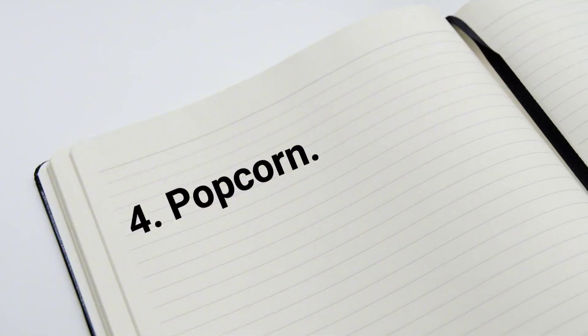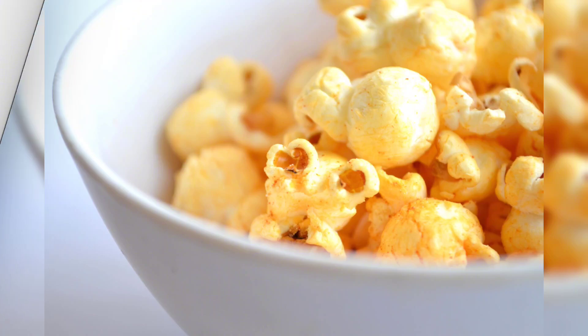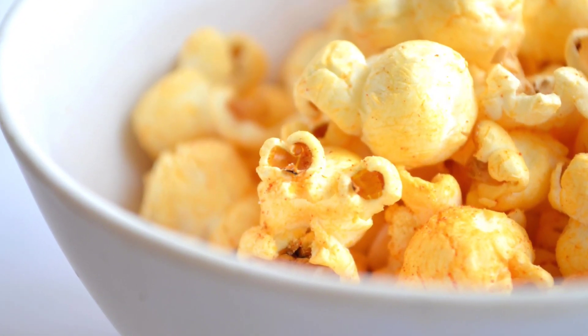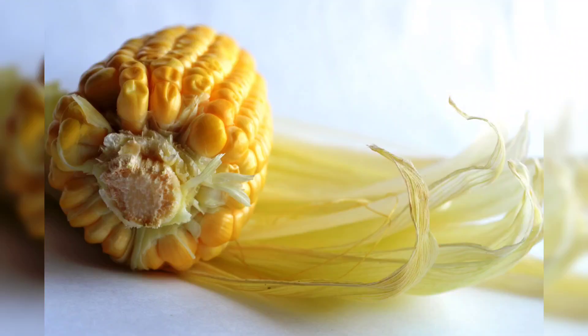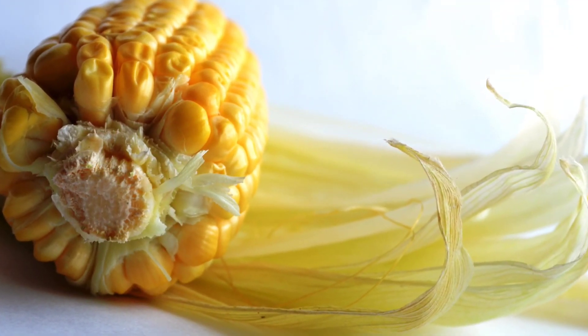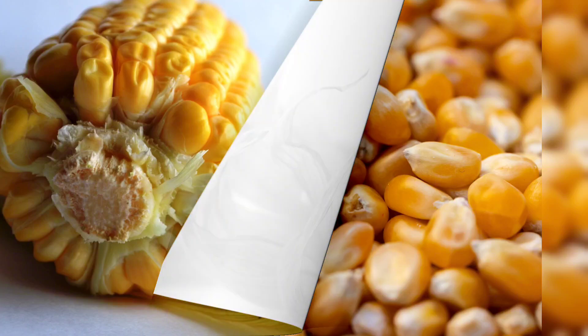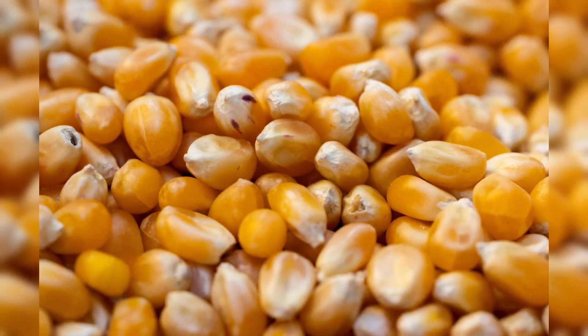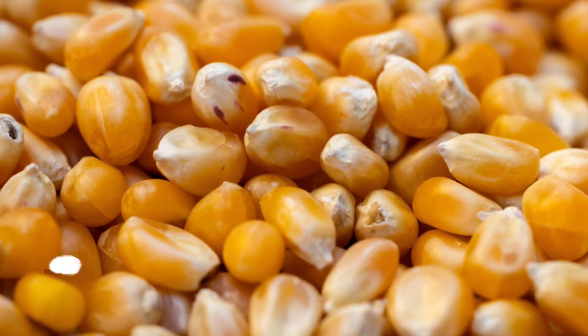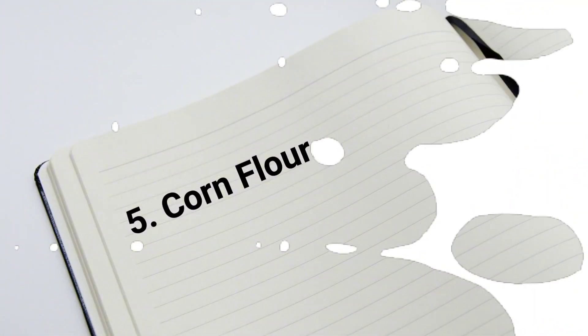4. Popcorn. Popcorn is the main raw material for making popcorn. This corn variety has small and hard seeds, low air content, and thick endosperm.